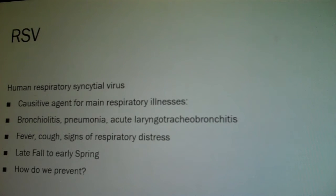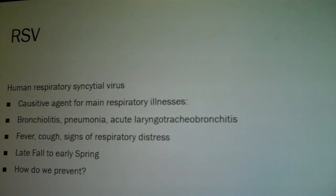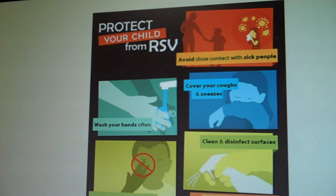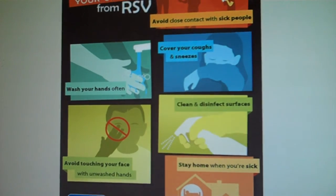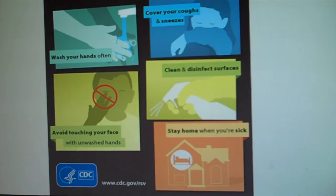RSV is the human respiratory syncytial virus — the causative agent for many respiratory illnesses. It is spread by droplets and also lives on surfaces. In healthy children it may seem like a common cold, but if the child has underlying health issues it is more of a concern. The health care provider will assess the severity and determine if hospitalization is needed. If a healthy child is hospitalized for RSV, it is most likely due to dehydration. Prevention includes avoiding close contact with sick people, washing hands, covering the mouth, avoiding touching the face with dirty hands, cleaning surfaces, and staying home when sick.